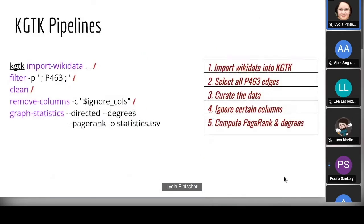Here's an example of pipelines — that little red slash symbol is how we chain commands. Here I'm importing Wikidata, creating a subgraph of the P463 edges, then doing some cleaning, then computing PageRank. That's just one example.